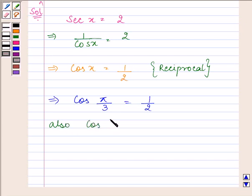Also, we know that cos x repeats after an interval of 2π. So cos 2π minus π by 3 will be equal to cos 5π by 3.